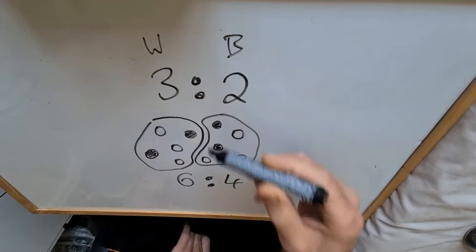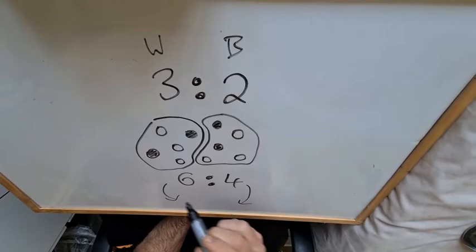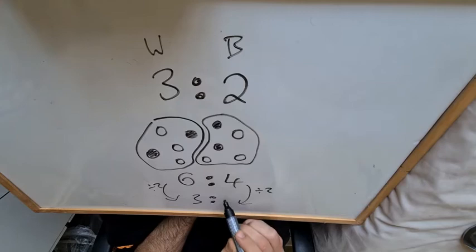We've just got to simplify this version because we've got six parts to four parts. So what we do is find a common factor, so a number that goes into both numbers. They're both even, so let's go with two. Divide by two, divide by two, we've got three to two. So that is your ratio and simplifying your ratio, which was a previous topic.